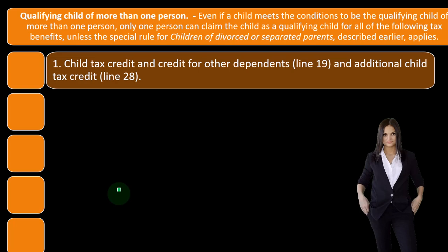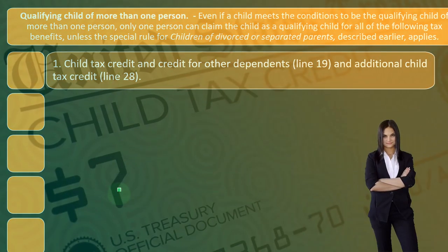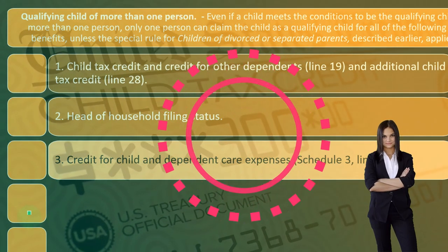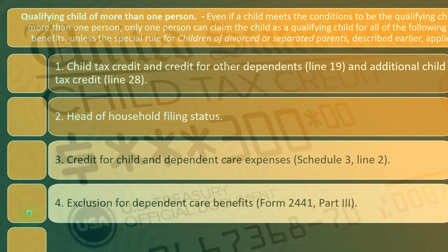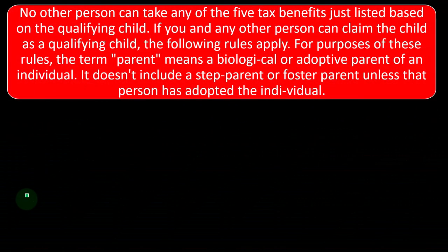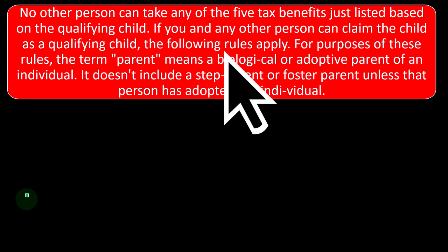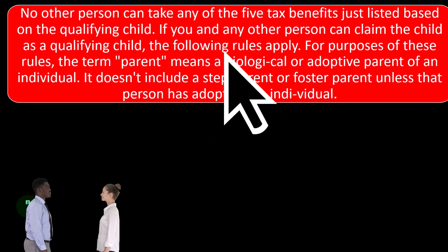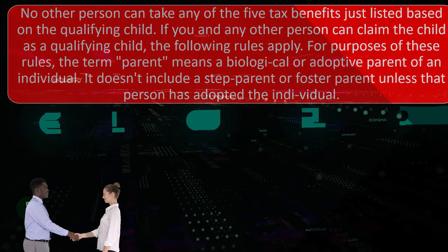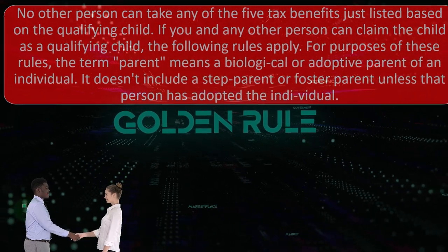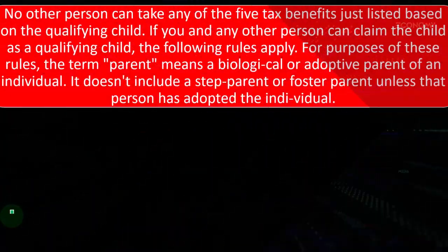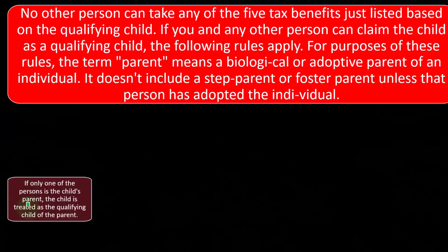The five tax benefits are: one, child tax credit and credit for other dependents (line 19) and additional child tax credit (line 28); two, head of household filing status; three, credit for child and dependent care expenses; four, exclusion for dependent care benefits; and five, the earned income credit. No other person can take any of these five tax benefits based on the qualifying child. For purposes of these rules, the term 'parent' means biological or adopted parent — it doesn't include a step-parent or foster parent unless that person has adopted the individual.